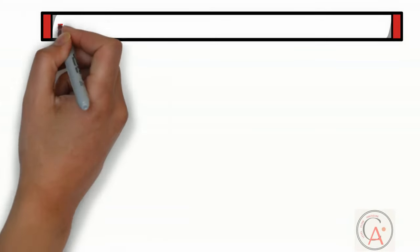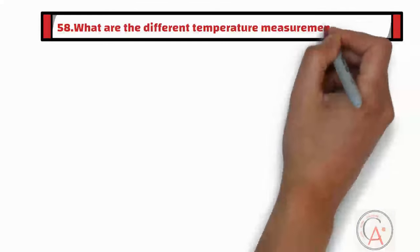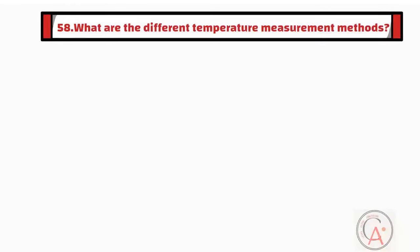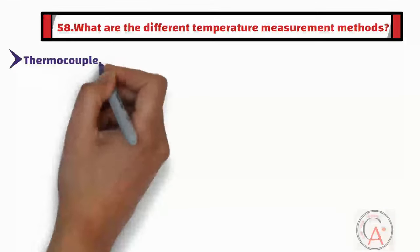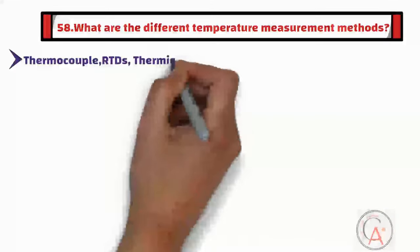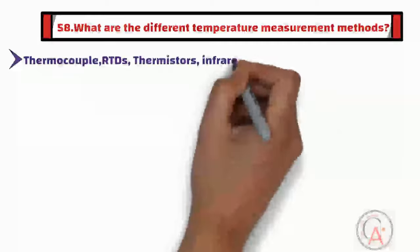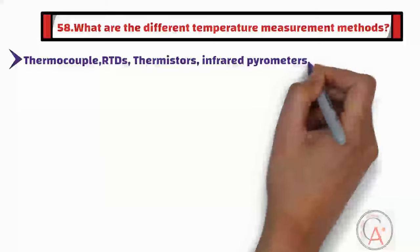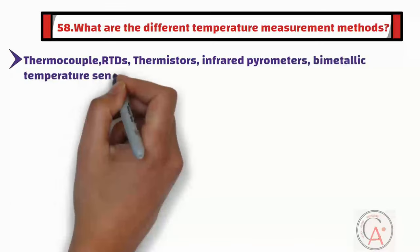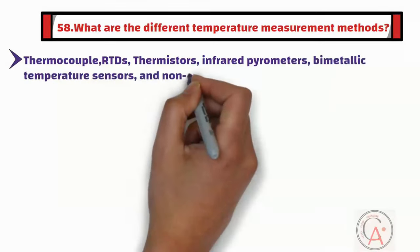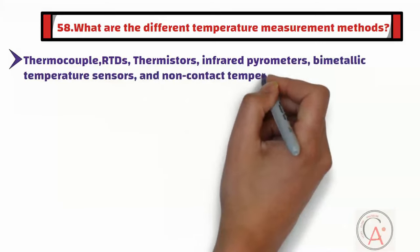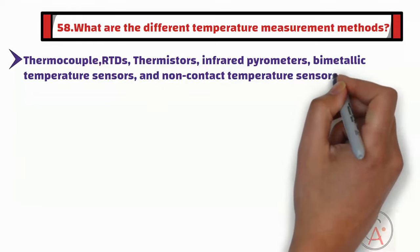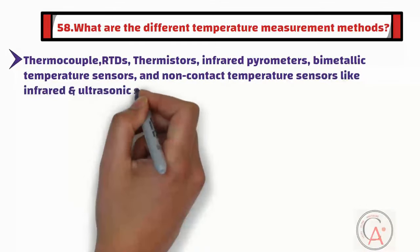Question fifty-eight is: what are the different temperature measurement methods? There are several temperature measurement methods including thermocouples, resistance temperature detectors, thermistors, infrared pyrometers, bimetallic temperature sensors, and non-contact temperature sensors like infrared and ultrasonic sensors.